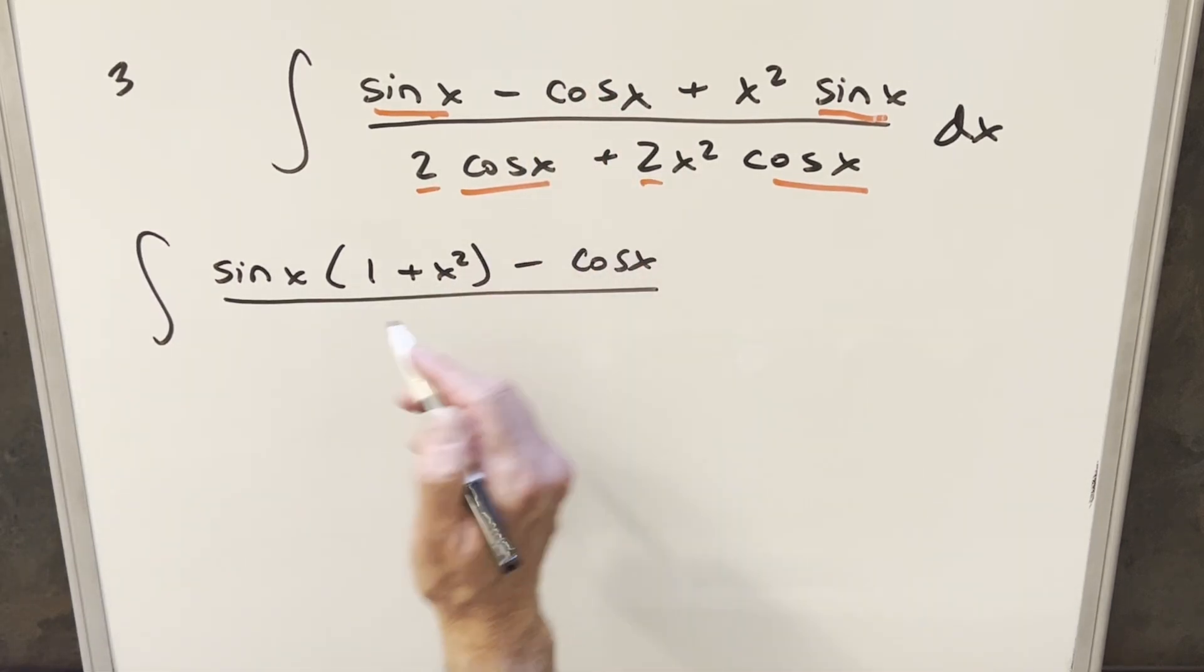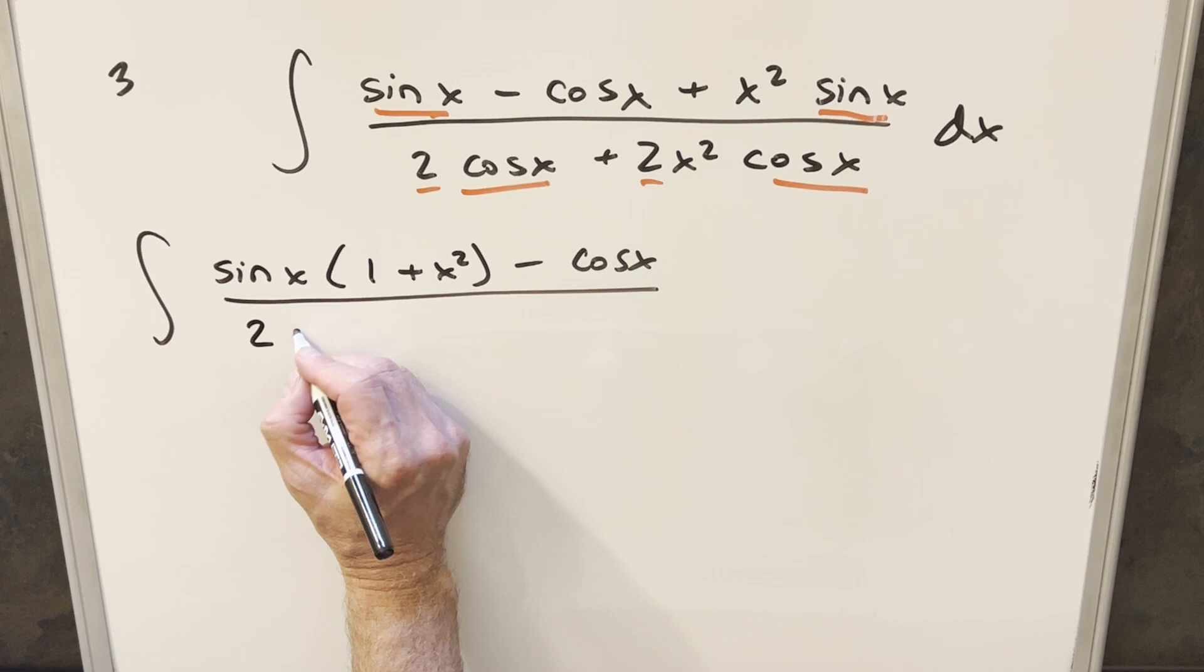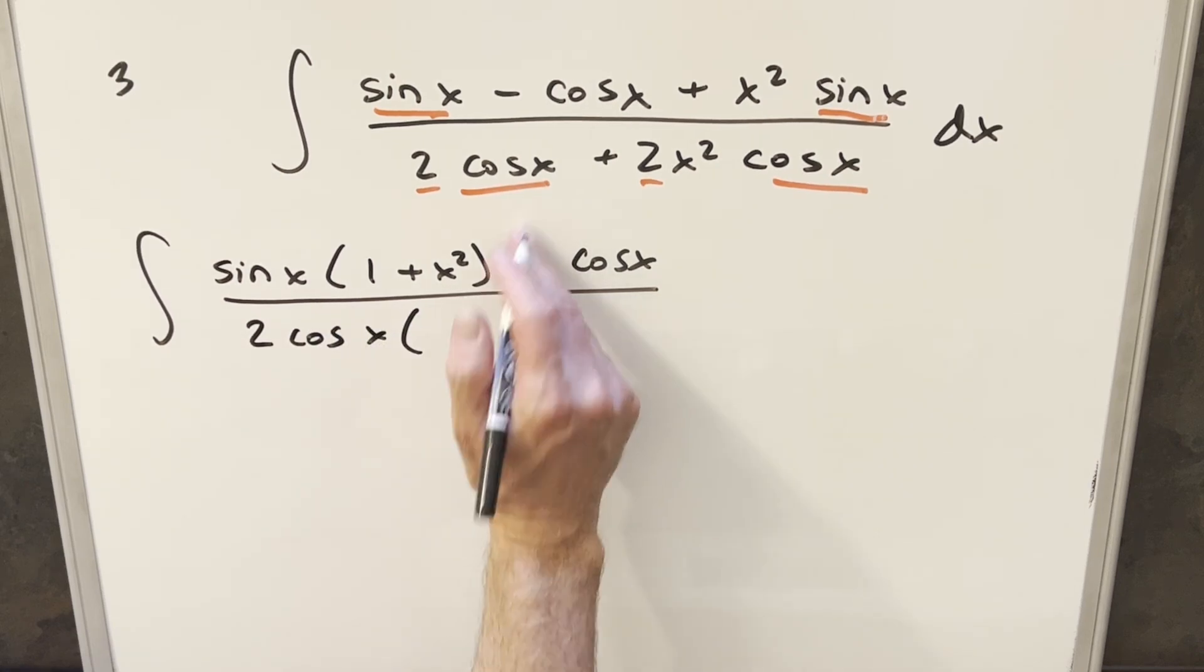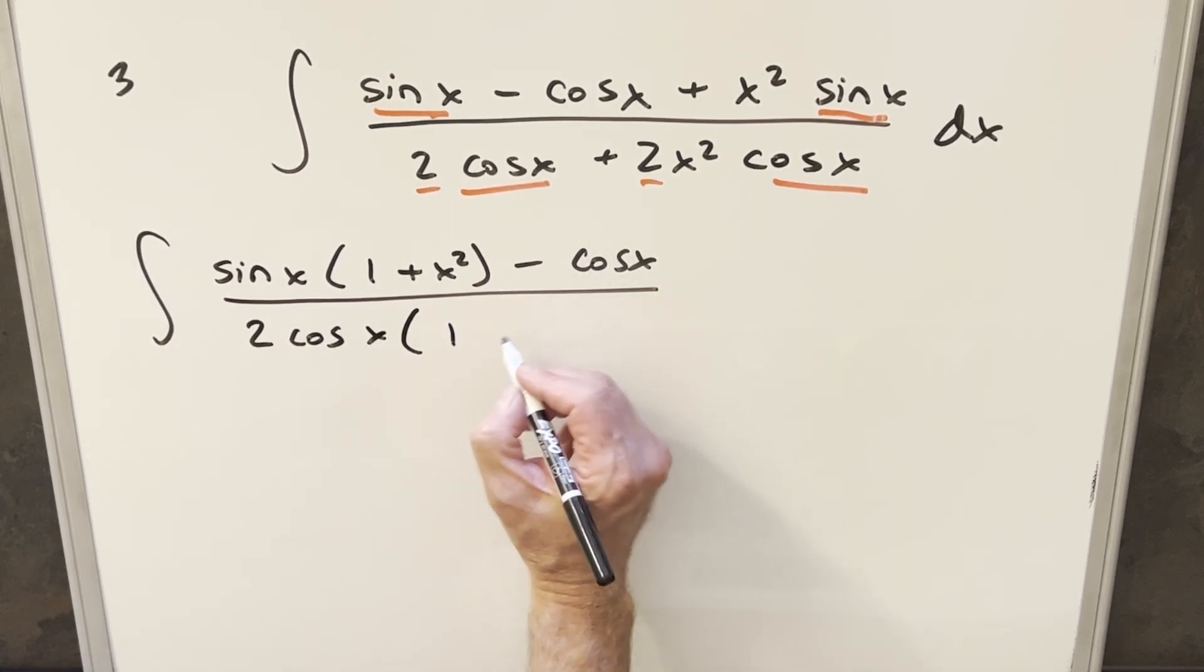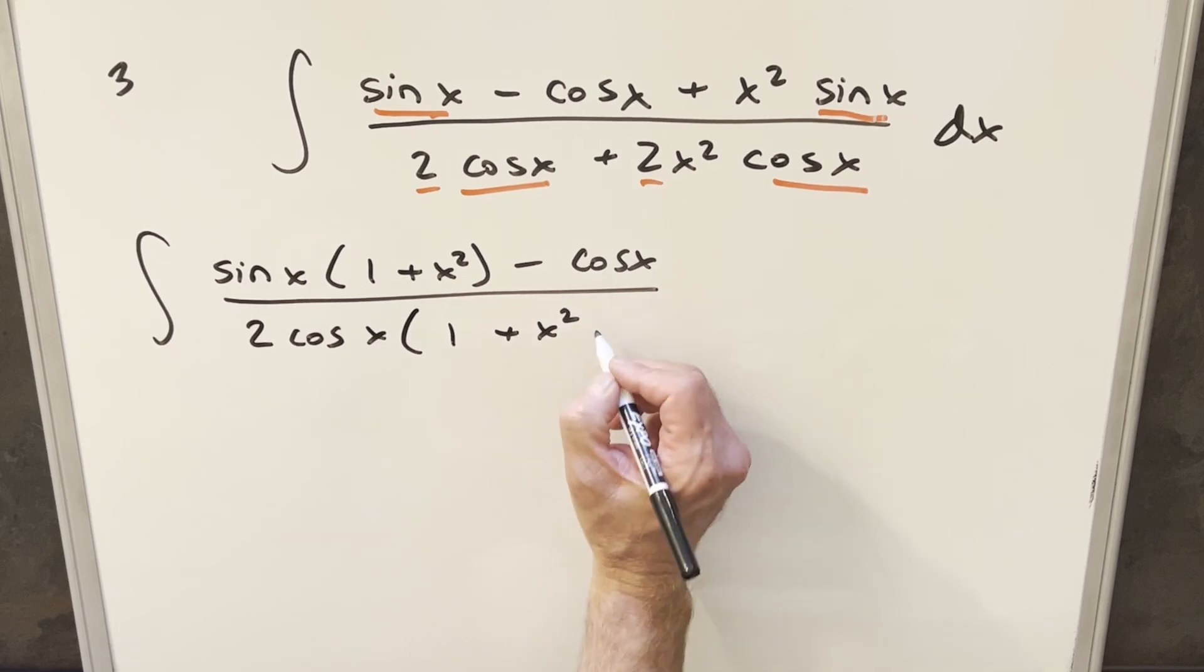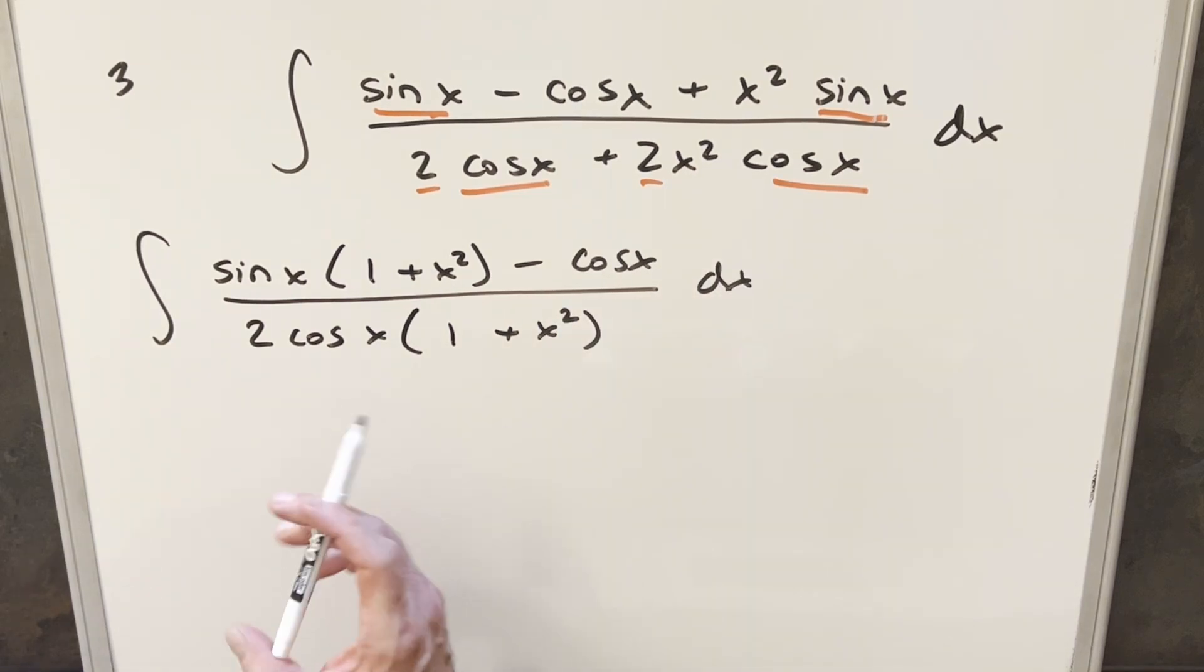And then here, if I just factor 2 cosine x out in the denominator, we have that in common. Then all that we're left with here is going to be 1, and this is just going to become plus x squared. Well, then from here, I can split this up into two fractions on the minus sign.